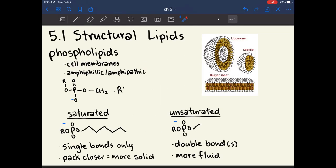Chapter 5.1 is about structural lipids. The most important one is the phospholipid, because it makes up all of our cell membranes. Phospholipids are able to do this because they're amphiphilic or amphipathic. These mean the same thing.